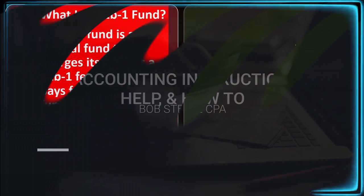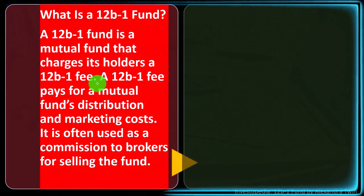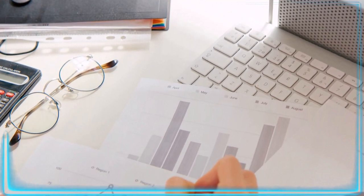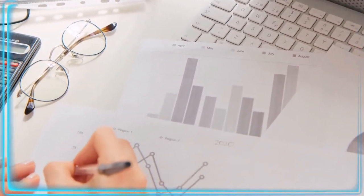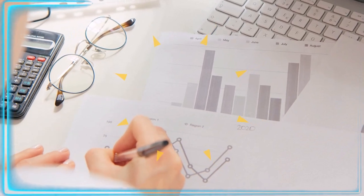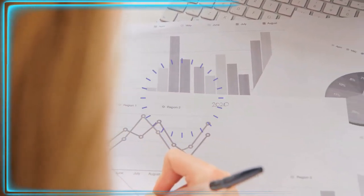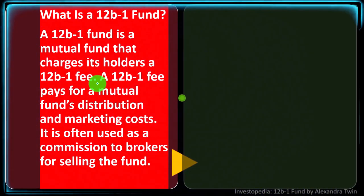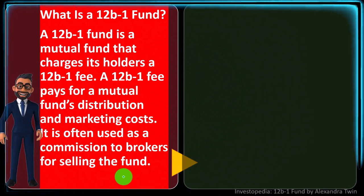We can categorize funds in different ways — for example, investing in a targeted fund, an index fund, or a managed fund. Now we're looking at categorization in terms of the fees being put in place — those being the 12B1 fee. A 12B1 fee pays for a mutual fund's distribution and marketing costs.